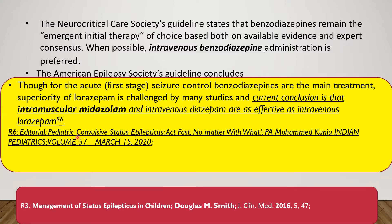The carry-home message: if you have intravenous lorazepam, use it — it is pharmacologically superior, even if real-life studies don't show that evidence. But if you don't have it, shed no tears — use intravenous diazepam. And if you don't have intravenous access at all, give intramuscular midazolam. Intramuscular midazolam may actually score over intravenous administration because you can give it earlier without wasting time trying to establish an IV line.